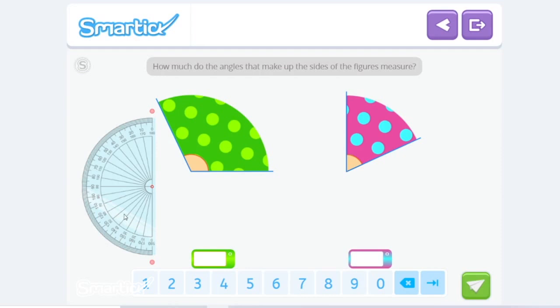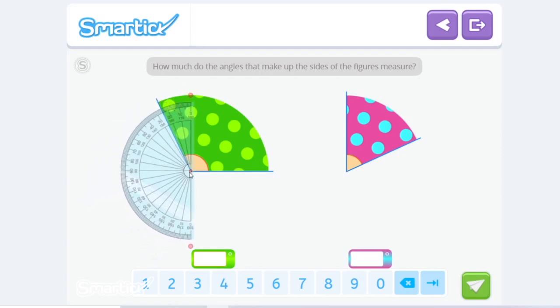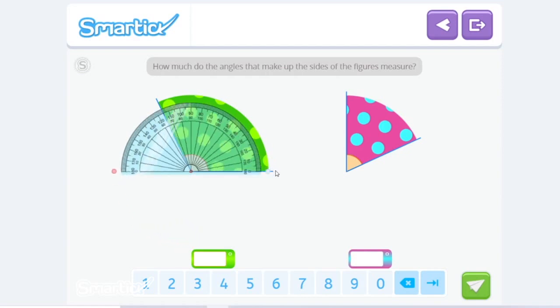Okay, let's grab the protractor and do the same thing as we did before. Make sure we align it, put the vertex, and turn it. Now reading it counterclockwise on the outer scale. So we have 0, 10, 20, 30, all the way to... It looks like it's between 110 and 120 degrees. So I would say it's 115 degrees.